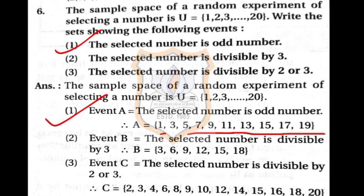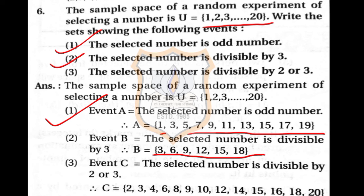Second event: the selected number is divisible by 3. Taking the multiples of 3 up to 20: 3, 6, 9, 12, 15, 18. Note that 21 is not in the set, so we stop at 18. This is Event B.